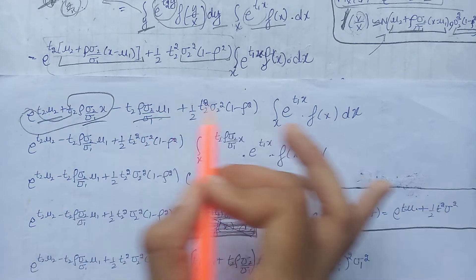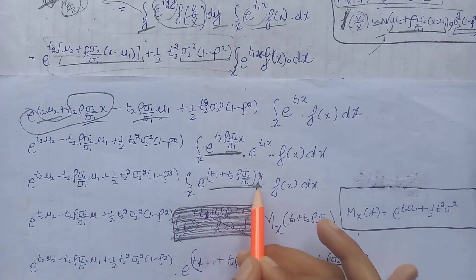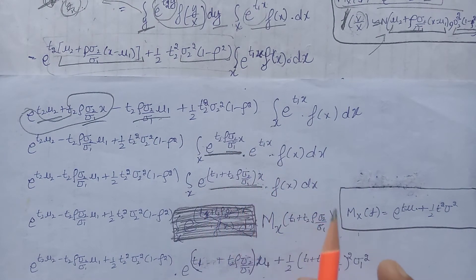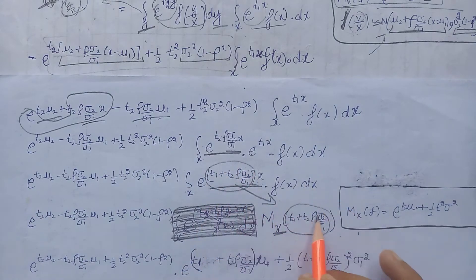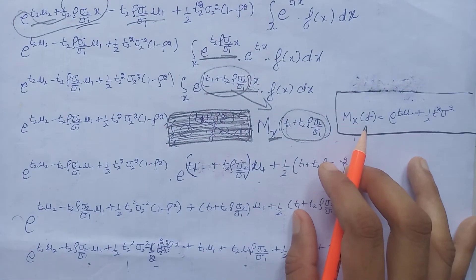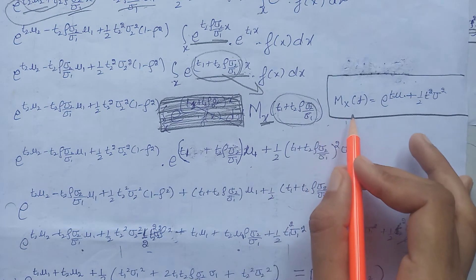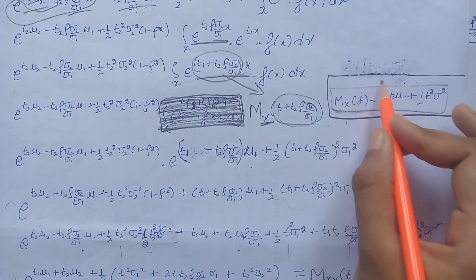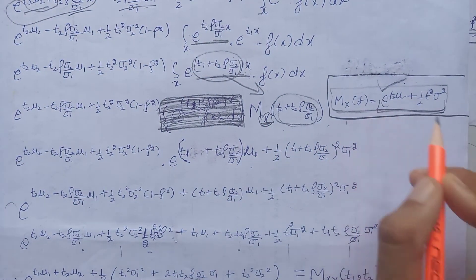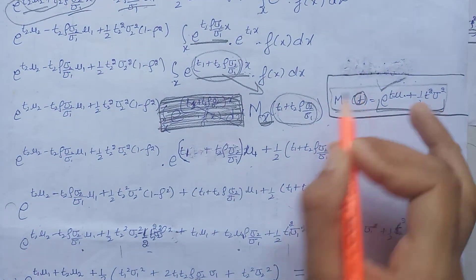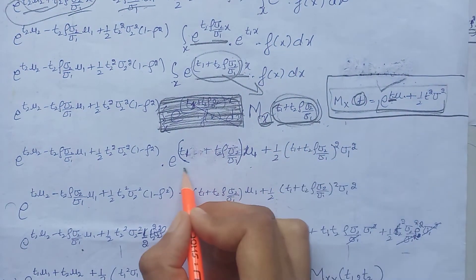Since that exponential term is a function of x, we write it inside the x-integral. Since the bases are the same, we add the two powers together and take x as common from those two terms. We can now see that this is actually the moment generating function of x, where at the place of t we write the combined term. We know that x belongs to a normal distribution with mean mu1 and variance sigma1 squared, so the MGF of x equals the standard normal MGF formula evaluated at that combined t value.